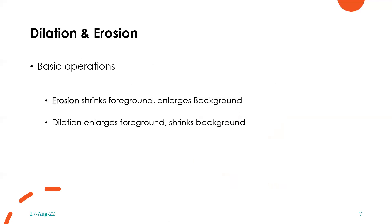Coming to types of morphological operations: the very basic operations are dilation and erosion, which are actually dual to each other. Erosion shrinks the foreground of the image and tends to enlarge the background, whereas dilation enlarges the foreground but tries to shrink the background in an image. This is about basic dilation and erosion, and with respect to their definitions they are dual to each other.